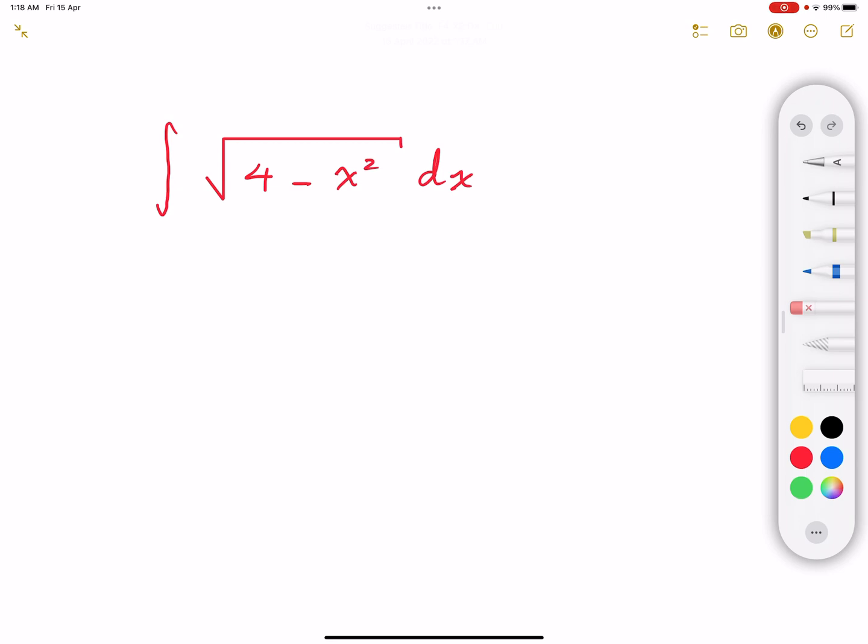So basically if we let x equals twice sine u, then what is inside the square root is going to be 4 minus 4 sine squared. So we can take the 4 as a common factor outside the integral, that's going to give us 2.